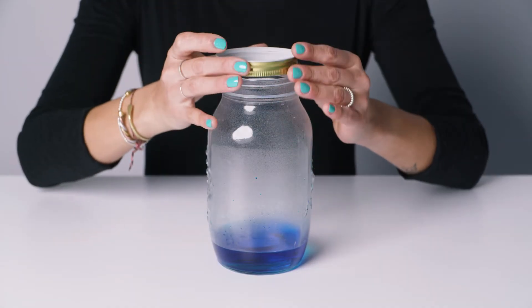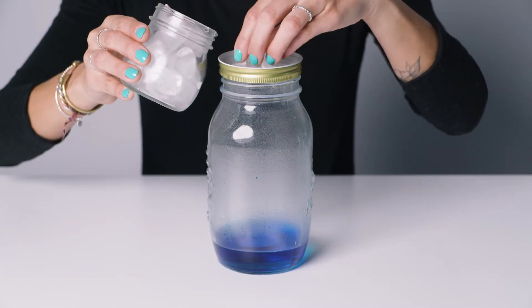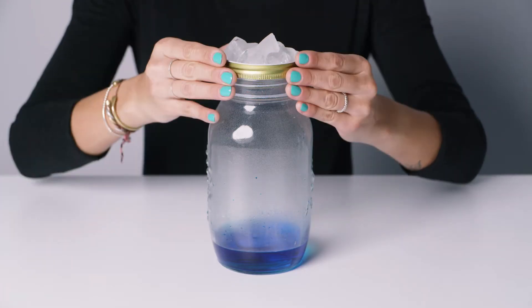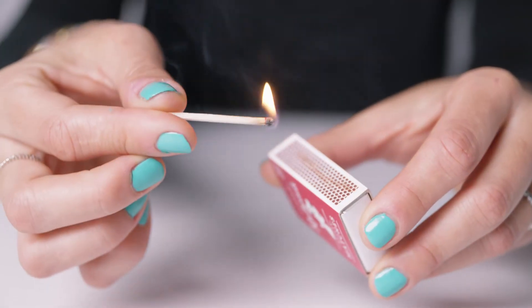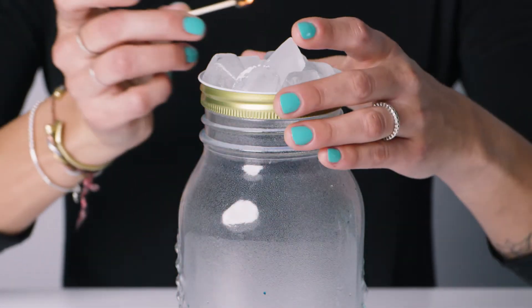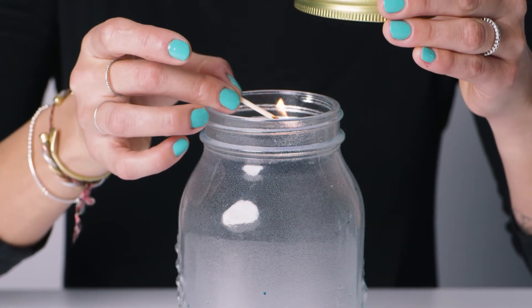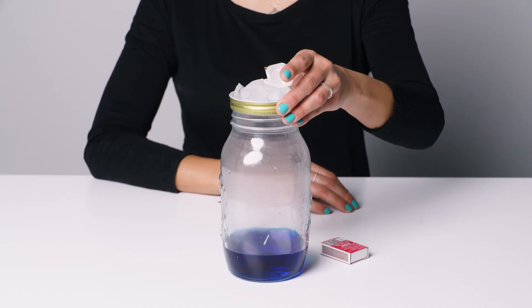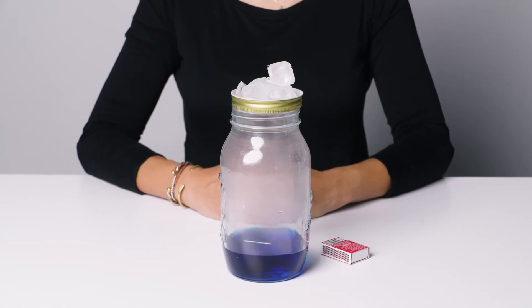Turn the lid of the jar upside down and rest it on top of the jar. Place several ice cubes in the lid. Have an adult light a match and let it burn for a few seconds. Lift the lid of the jar and hold the lit match above the water. After a few seconds drop the match into the water and replace the lid. What can you see?